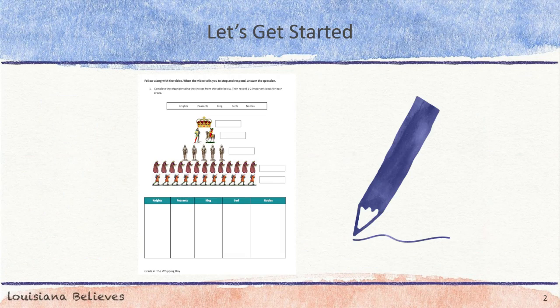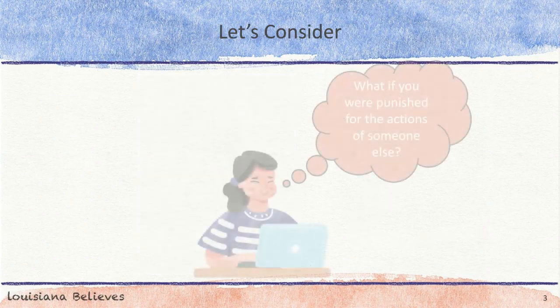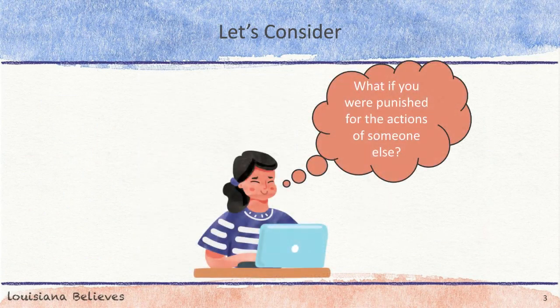Be sure to have your handout and something to write with for the video. What if you were punished every time someone else made a bad choice? That's what happened in the Middle Ages when someone did something wrong — a different person was punished. They were called Whipping Boys. Let's take a closer look at the different roles of people in medieval societies.